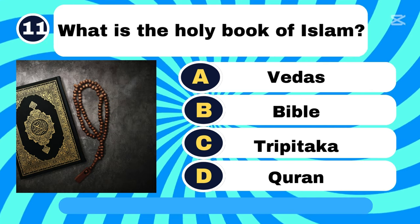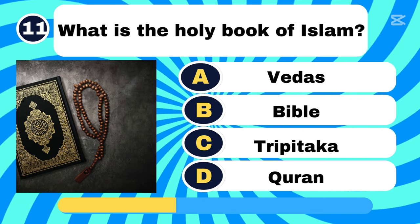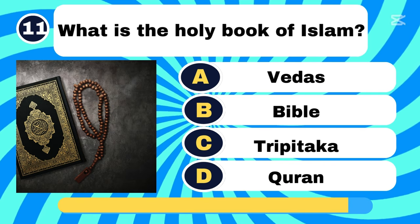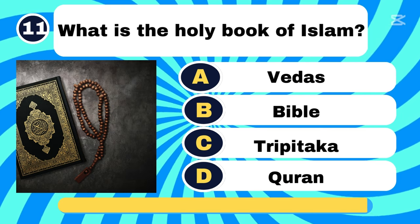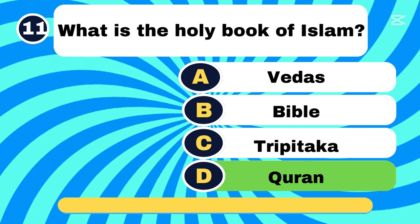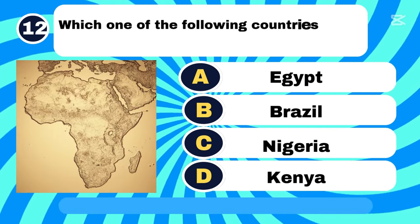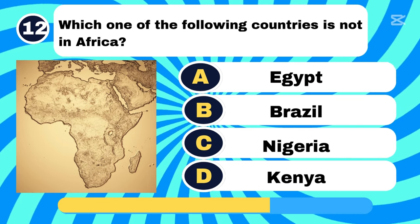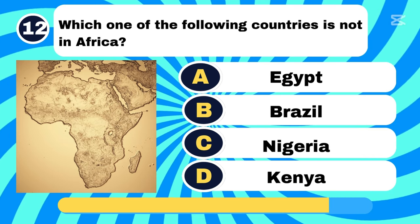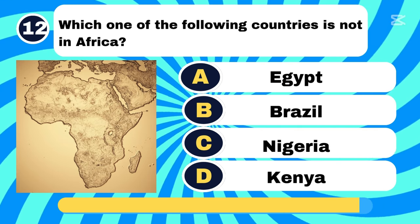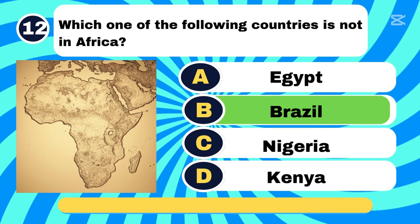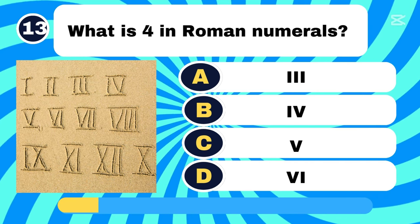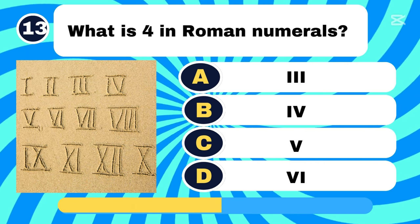What is the holy book of Islam? Letter D, Koran. Which of the following countries is not in Africa? Letter B. What is 4 in Roman numerals? Letter B.